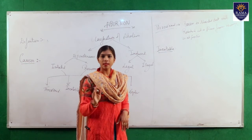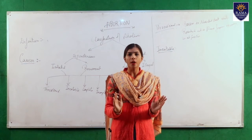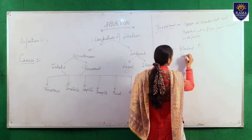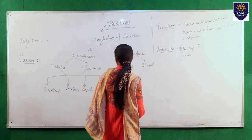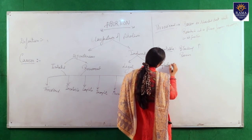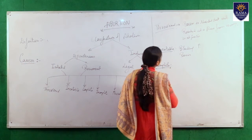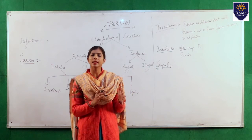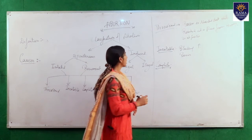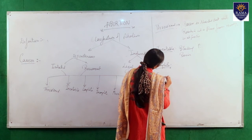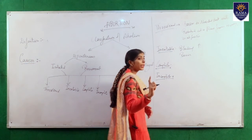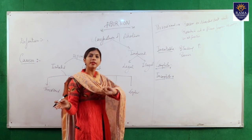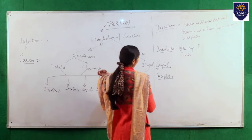Inevitable abortion means the progress of abortion has started and reached a state from where recovery is not possible — abortion will happen. In this type, bleeding increases along with pain. Complete abortion means the entire product of conception is expelled out from the uterus.